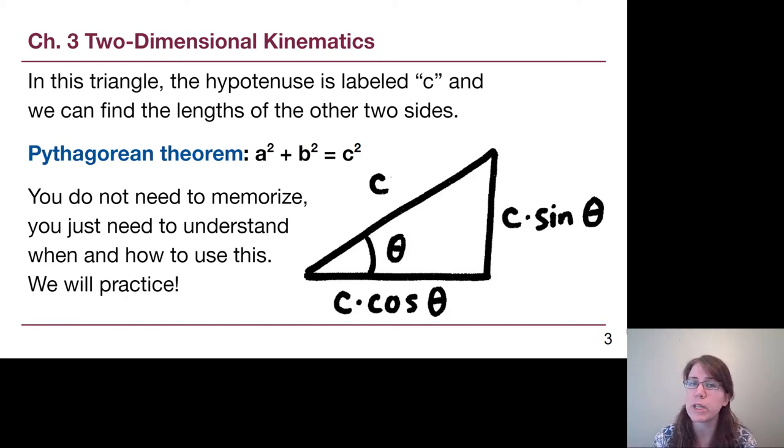The reason it's rewritten like this is because this is the most common way we're going to be applying those sine and cosine relationships, is that we know what the hypotenuse length is, and we are trying to find the lengths of the remaining two sides.